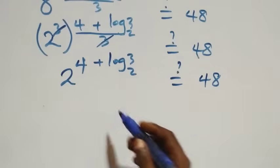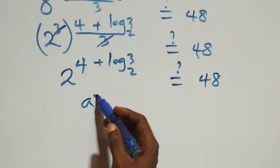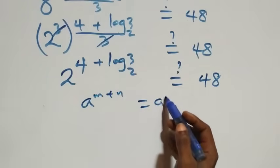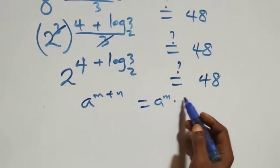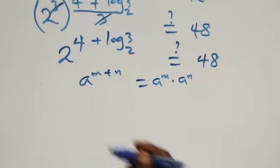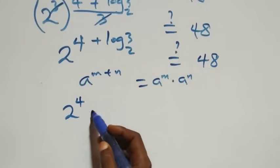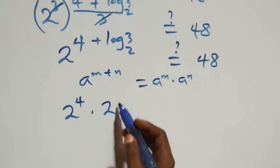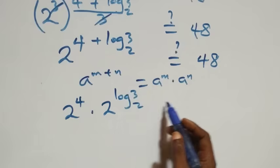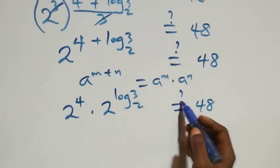Applying the law of indices — a^(n+n) = a^n · a^n — we split this as 2 raised to power 4 times 2 raised to power log₂3, which equals 48.